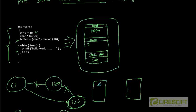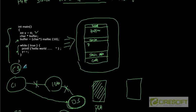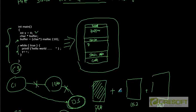This process-specific memory cannot be shared among different processes. When client C2 connects, it gets its own dedicated server process DS2 with its own memory area, separate from DS1. This is what we call the Process Global Area or PGA. If we have three clients connected, the total PGA is the summation of the memory of DS1, DS2, and DS3 combined.